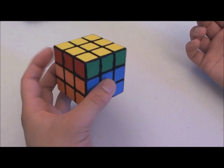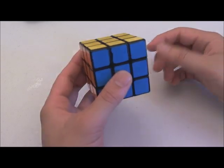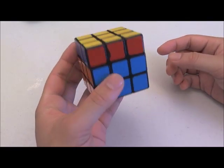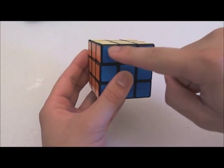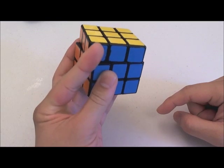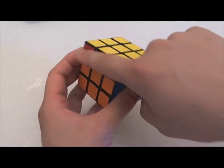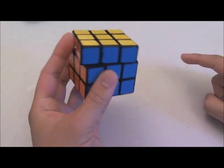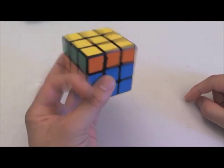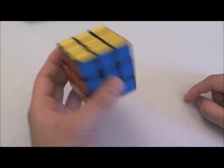Despite the ease of doing U prime, going the other way, which is U, is much more difficult, especially when you're a beginner and you're first learning how to turn. It's a bit strange. What I do is I put my finger on this sticker here, the tip of my index finger, and I pull the layer back like this. So the motion looks like this. So if I did U prime and U together, it would look like this. Something like that.